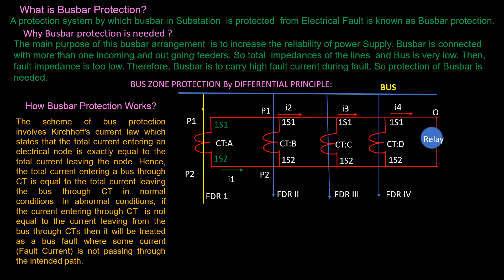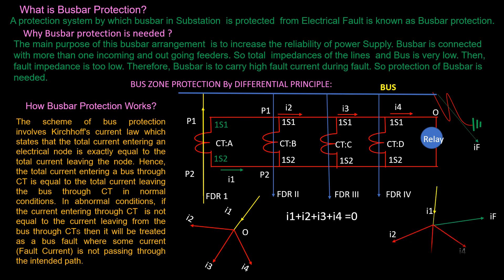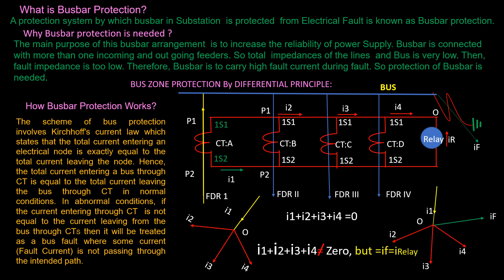Under normal conditions, the sum of all currents is zero. During a fault, the currents do not sum to zero. In general, the sum of measured currents is known as the operating quantity, and the operating quantity can be either physical or numerical.